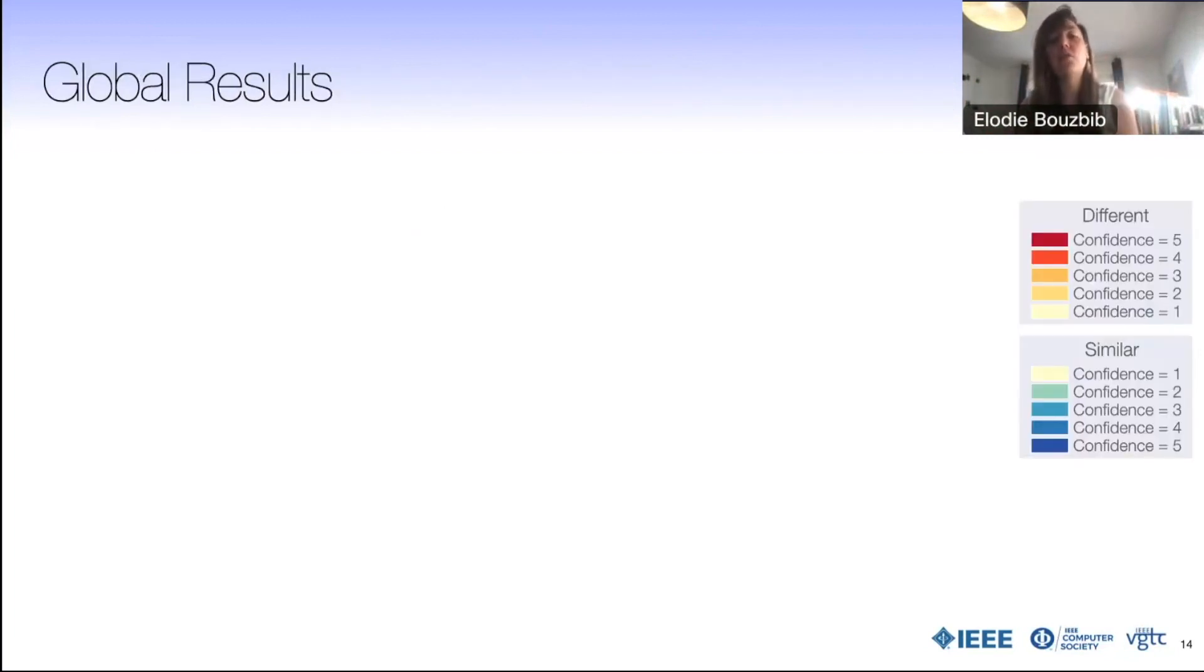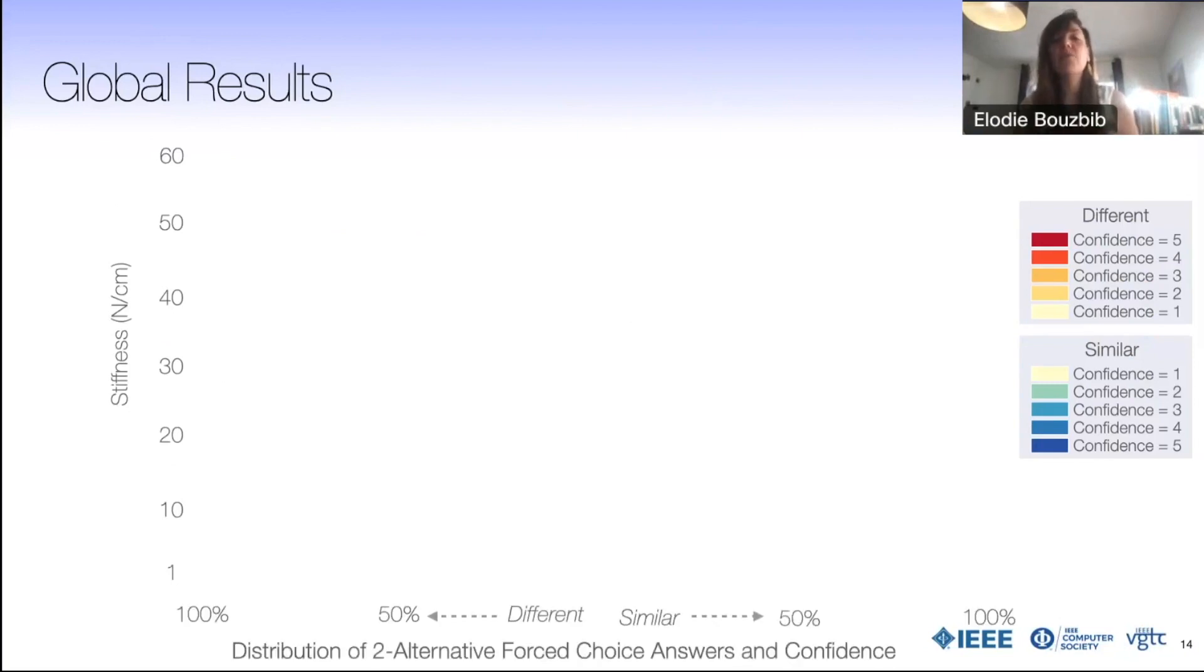We used this color coding for representing the confidence level. When participants felt it was different, we represent it in red. If it was similar, we represent it in blue. On the y-axis, we represent the stiffnesses and on the x-axis, we represent the distribution of the two AFC answers and their confidence. For instance, here, we are at one newton per centimeter, which basically means that you have one centimeter deformation for 100 grams applied. Pretty much no one believed it with a high confidence level.